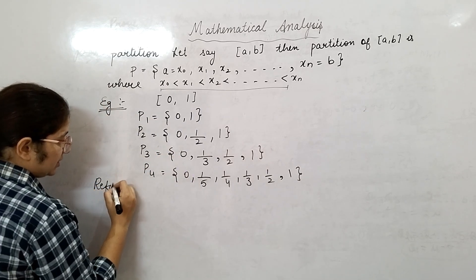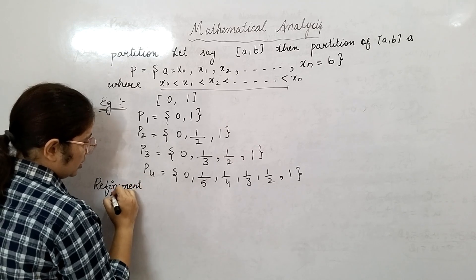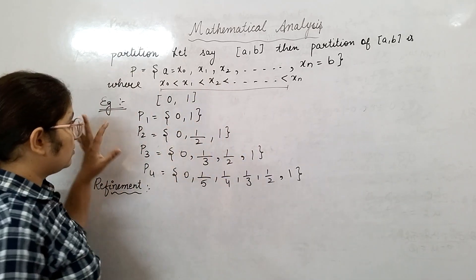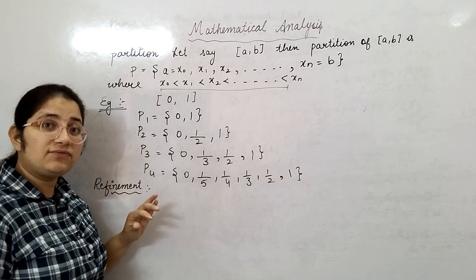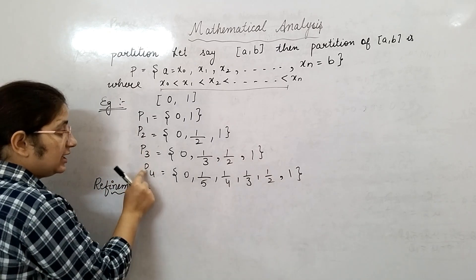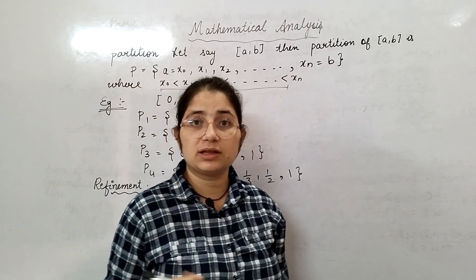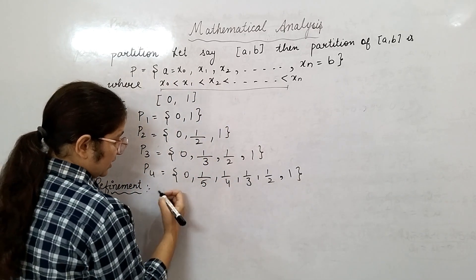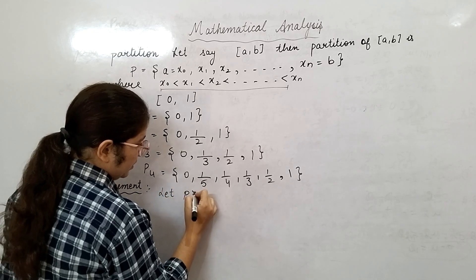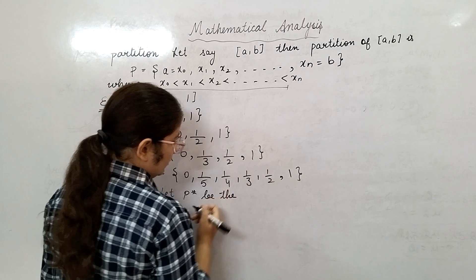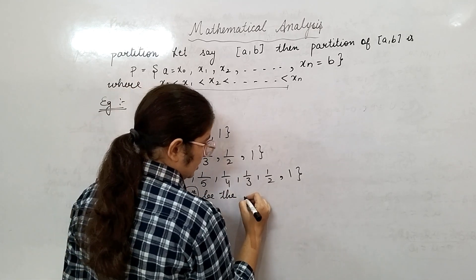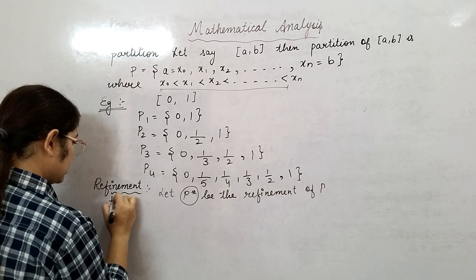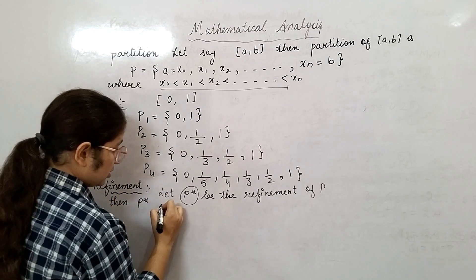Second definition is refinement. Refinement means to make it finer. For example, if I'm talking about P₁, then refinement of P₁ will be P₂, P₃, and P₄. What does refinement mean? We make it finer by creating smaller and smaller sub-intervals. For example, let P* be the refinement of P.